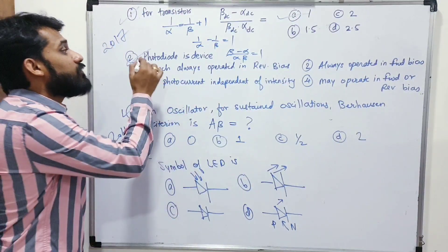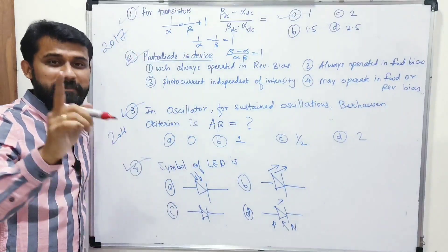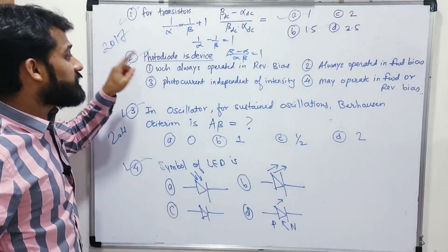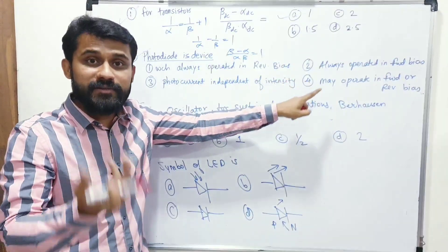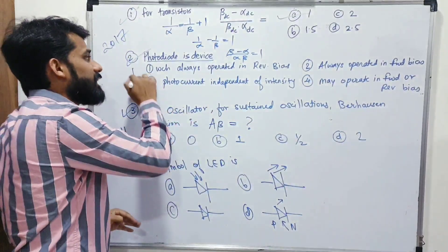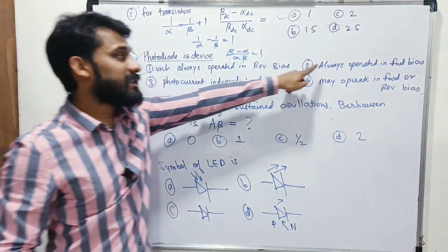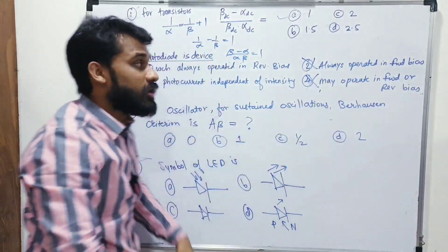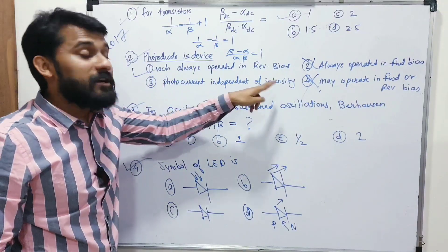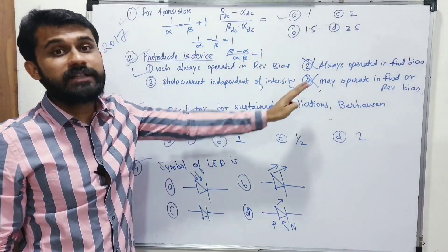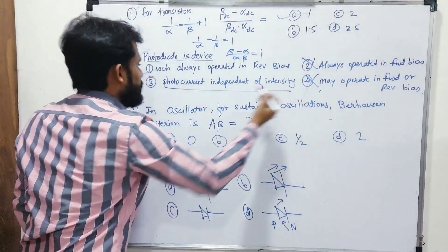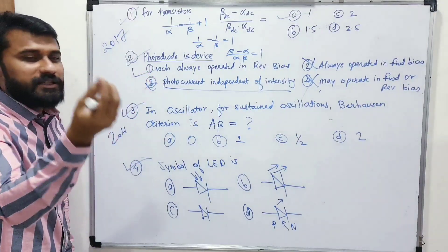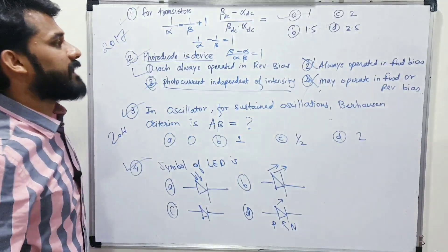Second 2017 question: what is a photodiode? A photodiode senses light and always operates in reverse bias — not forward bias. The photo current is directly proportional to the intensity of light falling on it. The first option — that it always operates in reverse bias — is correct. Both 2017 questions can be solved in under 10 seconds each.